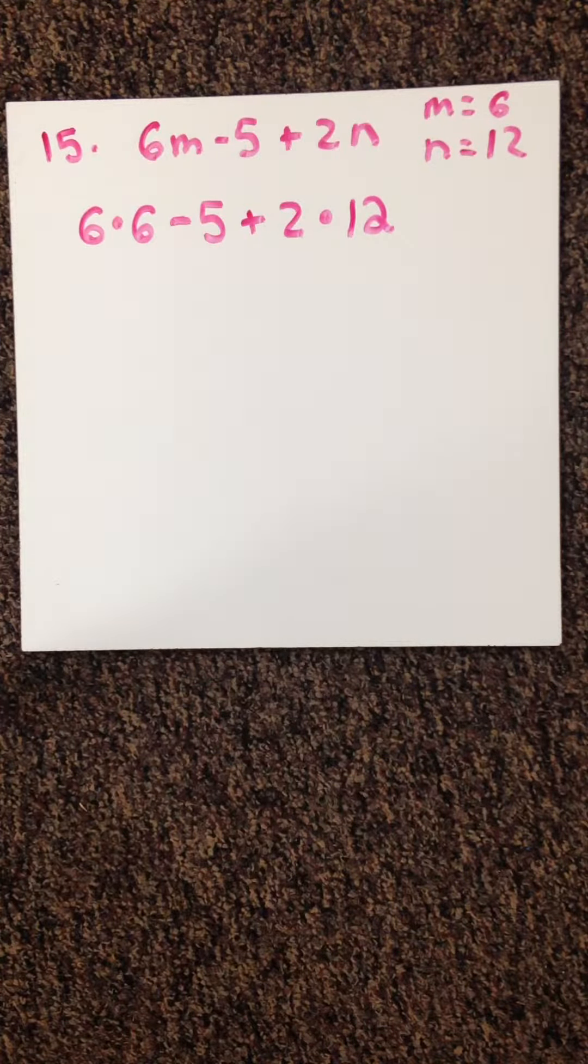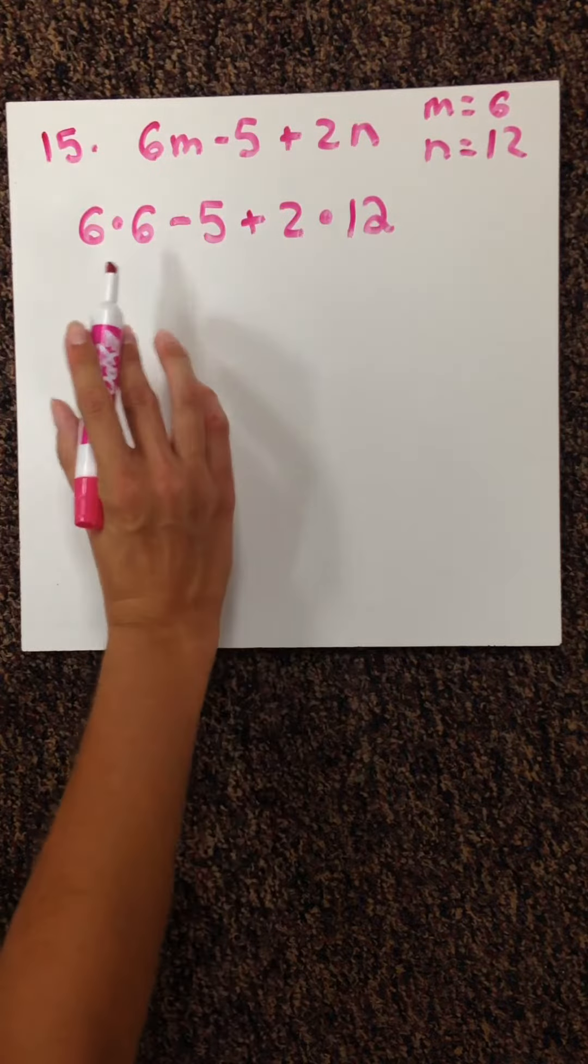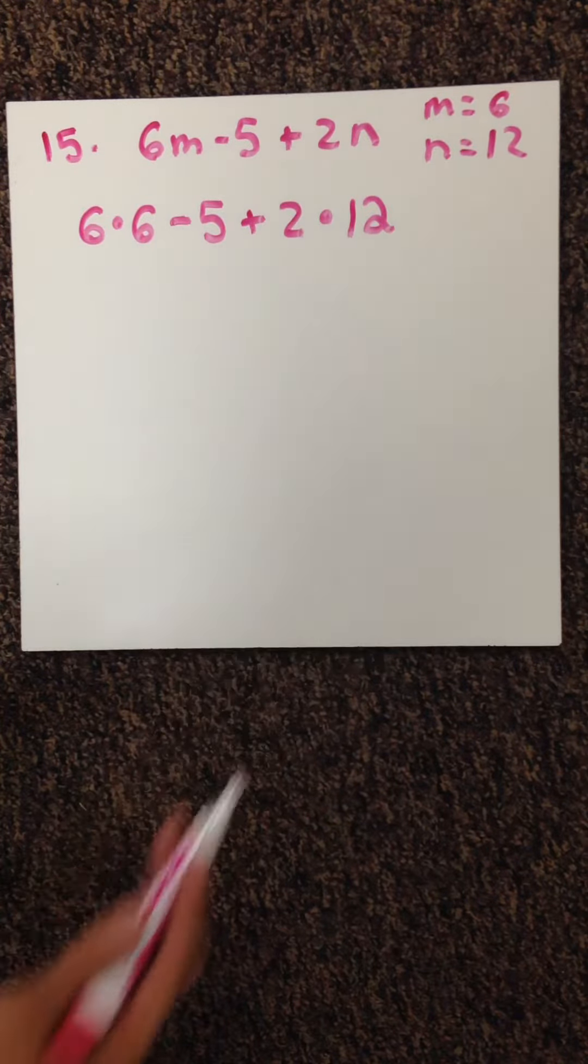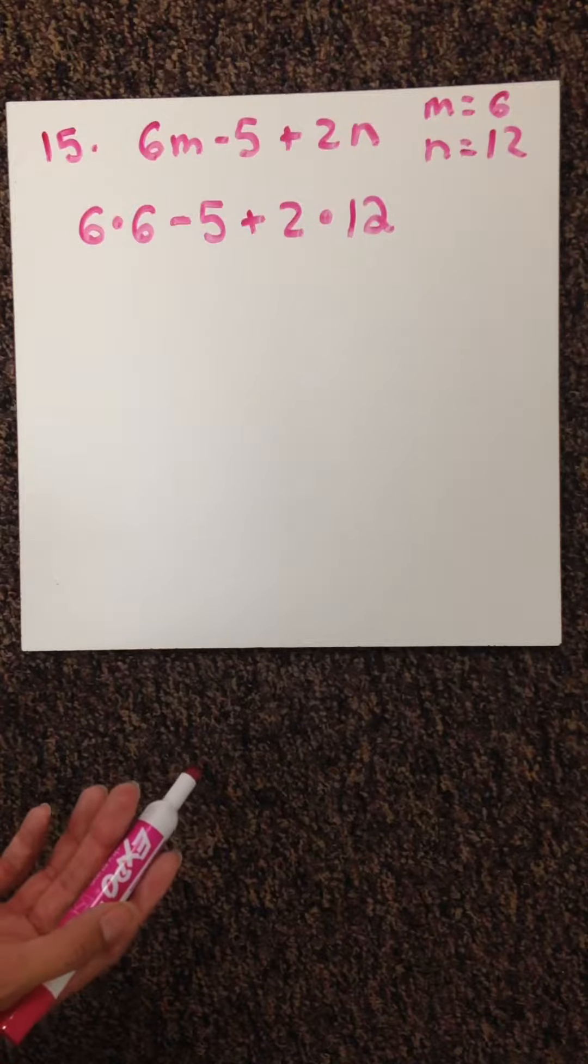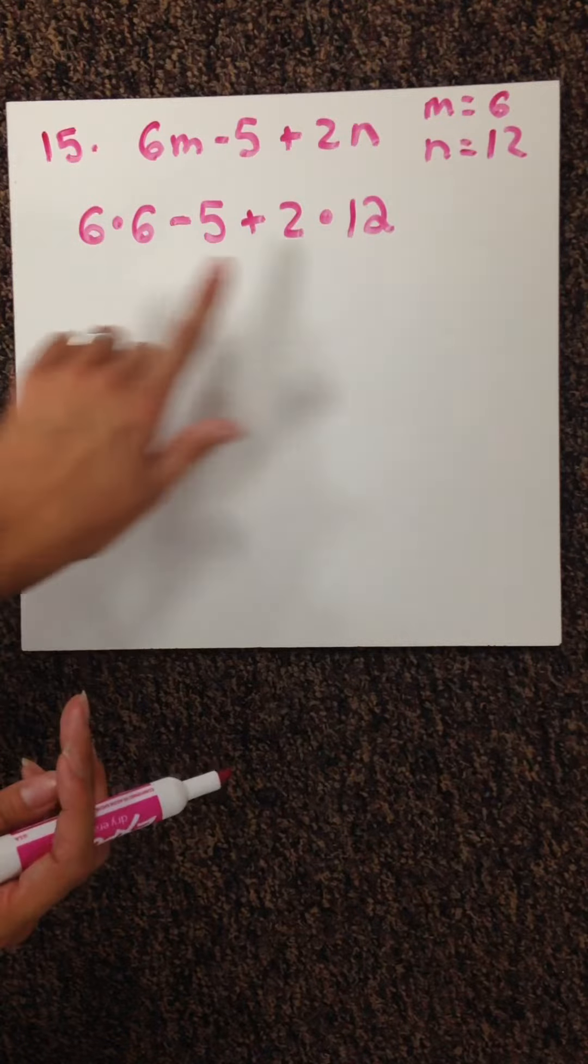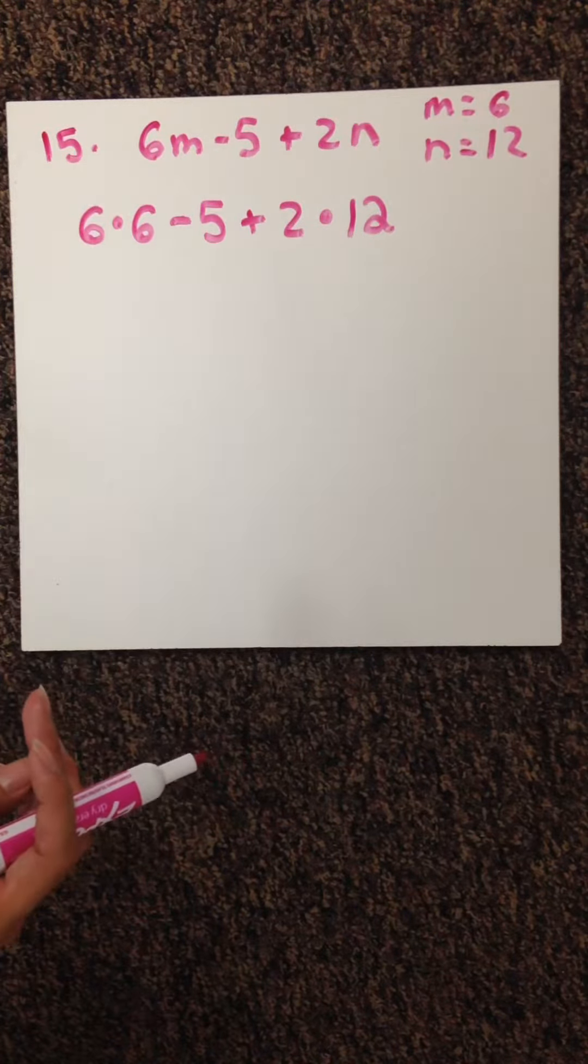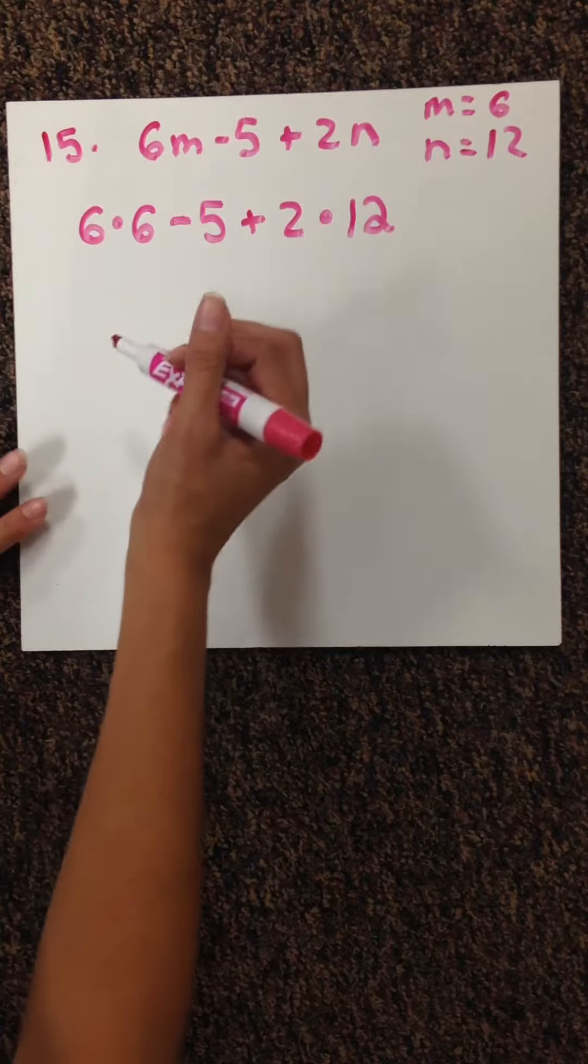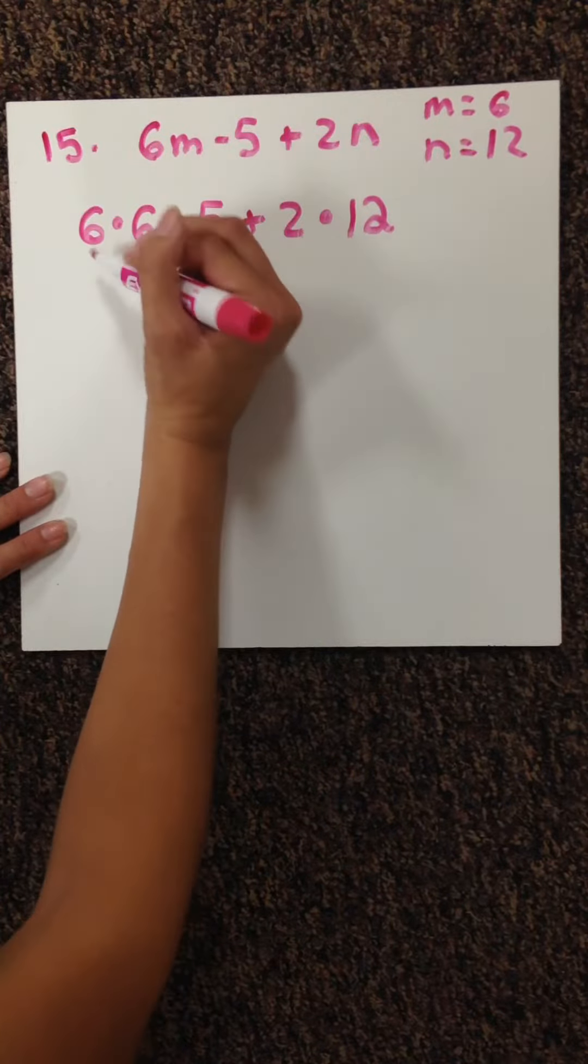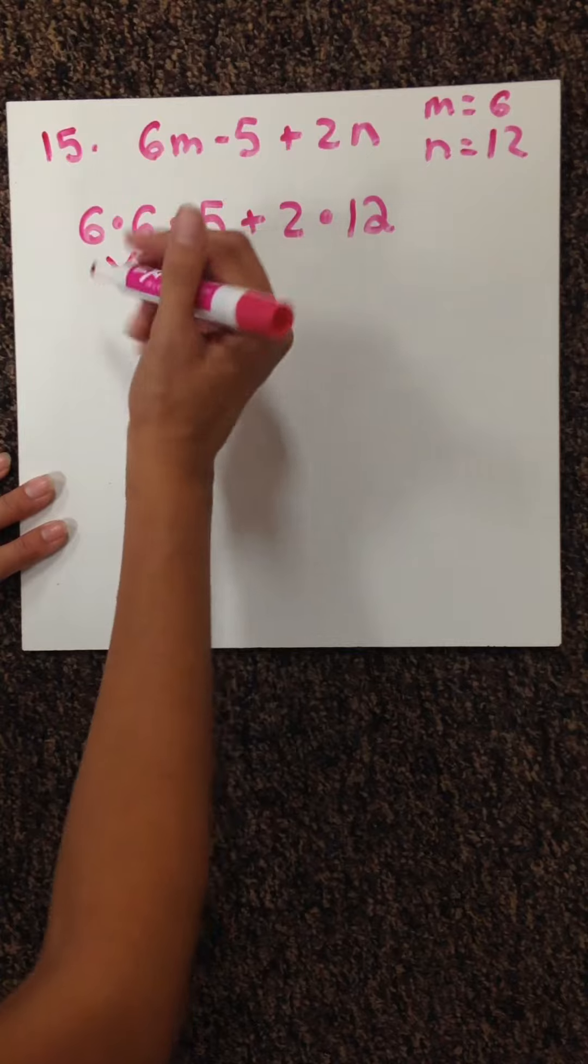You're asking us to do order of operations. We have multiplication, subtraction, addition, and more multiplication. Multiplication is most important. We have it twice, so we're going to work from left to right. 6 times 6 is our first step. We get that is 36.